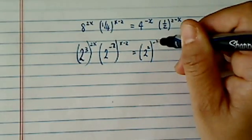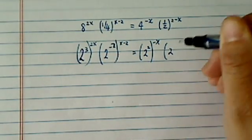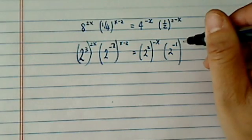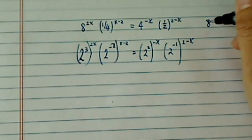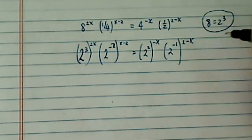2 to the 2 is 4. All I'm doing here is using the property that 8 is 2 to the third. I used that one.